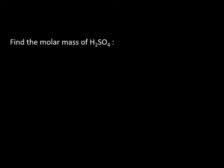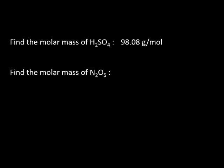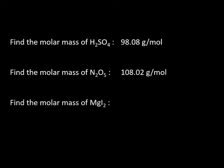Finding the molar mass of sulfuric acid — pause the video and do the calculation. The answer is 98.08 g/mol. Try this one: N₂O₅, dinitrogen pentoxide — you should get 108.02 g/mol. Third example: magnesium iodide — you should get 278.11 g/mol.